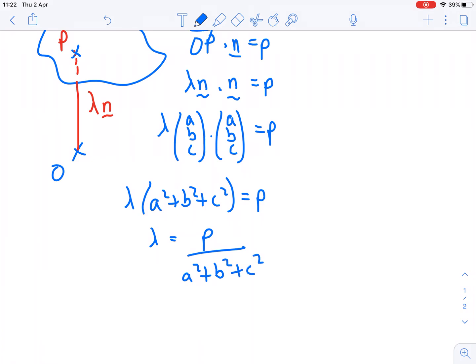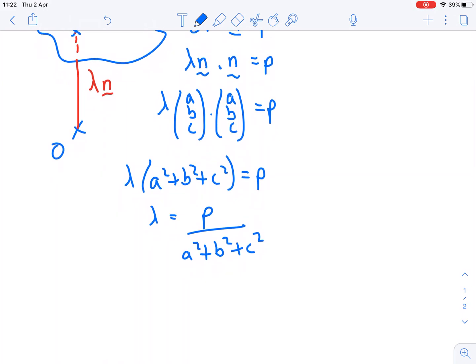Now you might have spotted something that's happening here. What we're actually looking for is the distance, so the distance is the magnitude of the vector OP, which is equivalent to lambda lots of the magnitude of the normal vector.